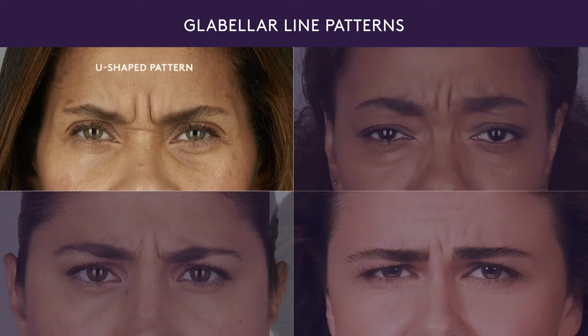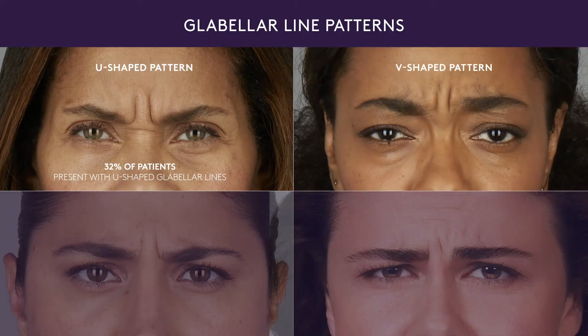As with moderate to severe forehead lines, you'll want to individualize treatment for the patient's unique glabellar line patterns. Four common glabellar line patterns have been identified. The most common is the U-shaped pattern, presenting as a depression between the brows in the form of the letter U — 32% of patients present with this pattern. A V-shaped pattern is seen when the eyebrows look further apart and an intense depression between the brows is observed during contraction, occurring in 30% of patients.